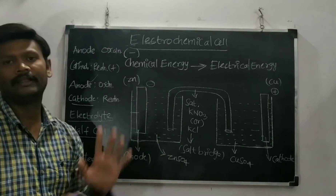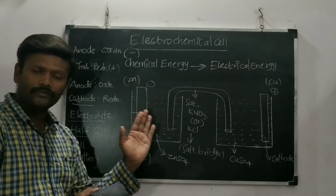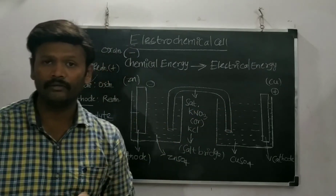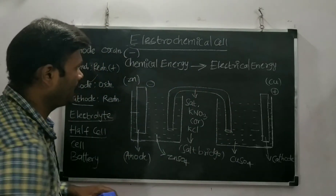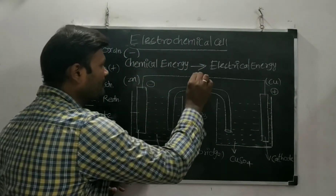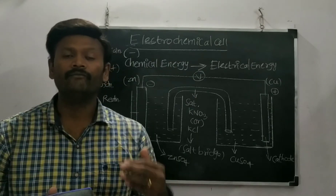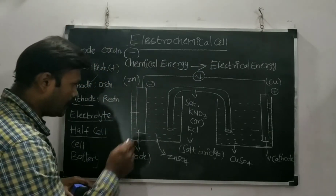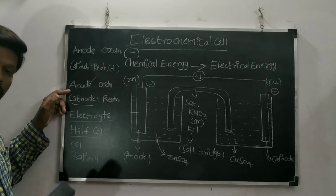If there is a loss of electrons taking place, that half cell is called an oxidation half cell. If gain of electrons takes place, that half cell is called a reduction half cell. When you combine these two through an external wire, a potential difference is produced, which is extracted in the form of electrical energy.